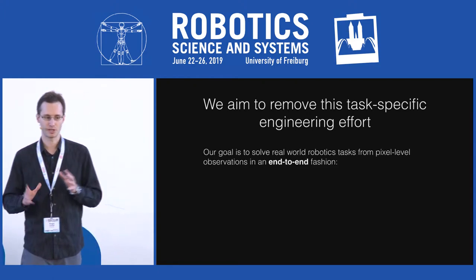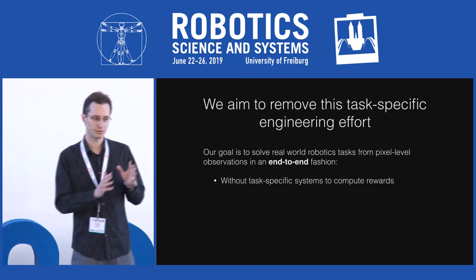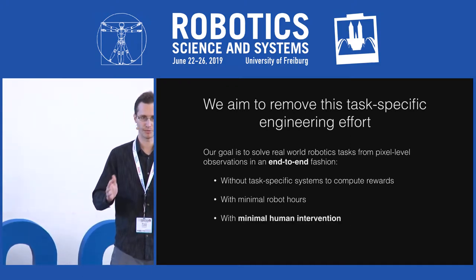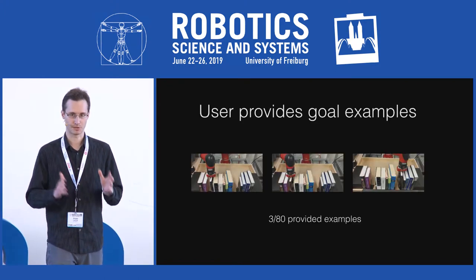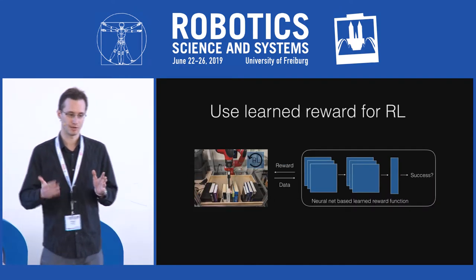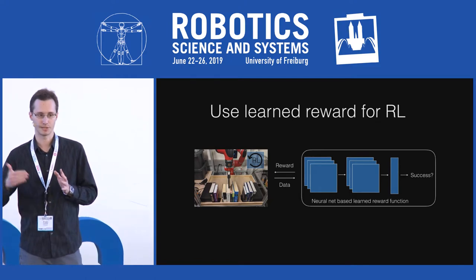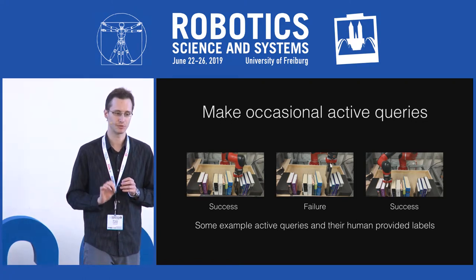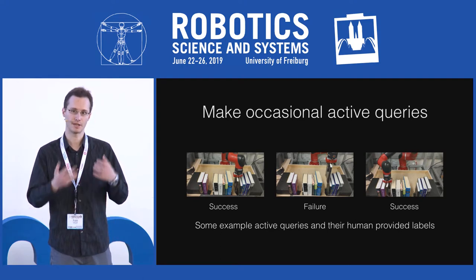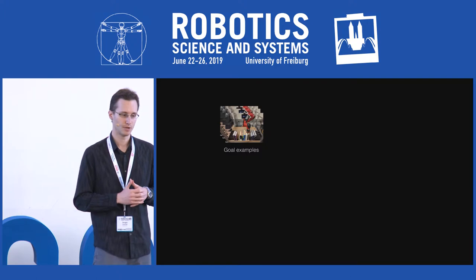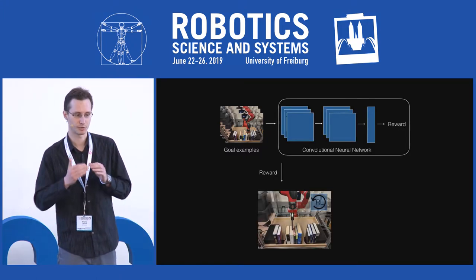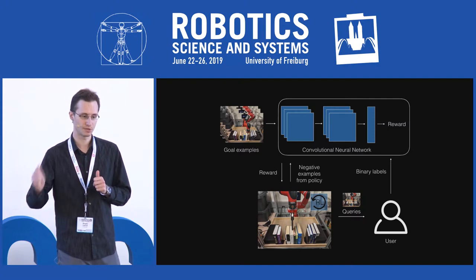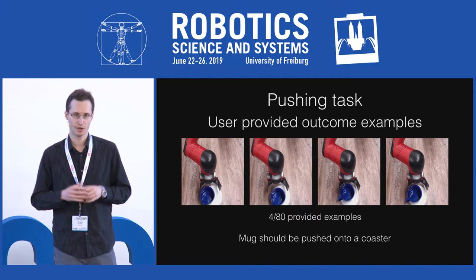We build on VICE to solve real-world robotic tasks from fixed raw image observations end-to-end, without task-specific systems to compute rewards, with minimal robot hours, and minimal human intervention. We start with examples of successes and failures from a human user, train a classifier outputting probability of success, and use VICE to add all robot data as negatives. We also accelerate learning by allowing the robot to make a small number of active queries — when uncertain, it asks the user whether a state is a success or failure, adding those labels to the training set very sparingly.